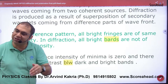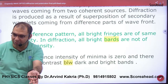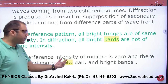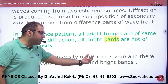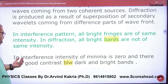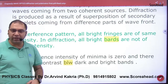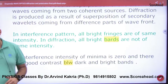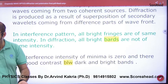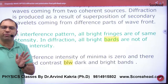In diffraction the intensity would decrease. Interference intensity of minima is zero, and there is a good contrast between dark and bright bands — because the crest would cancel the trough completely. In diffraction, there is no good contrast.